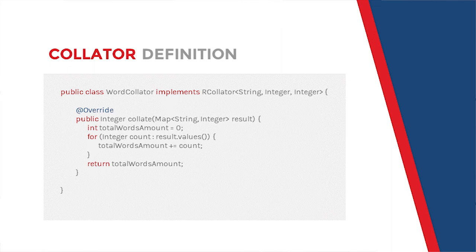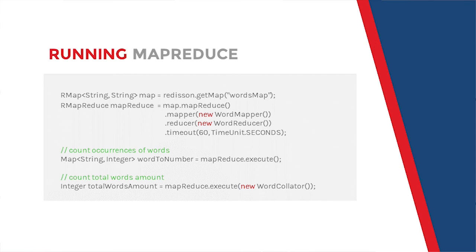The collator is an optional object and is used only when you need to get a result as a single object. In our example, it could be the total amount of words used in a book. Finally, the code example shows how to run the MapReduce process itself. As I said, each Redisson collection has MapReduce support through the mapReduce method. It exposes an API for defining mapper, reducer, and timeout parameters. And when you're ready to run MapReduce, you call the execute method. There are two versions, and one of the versions allows you to define a collator.